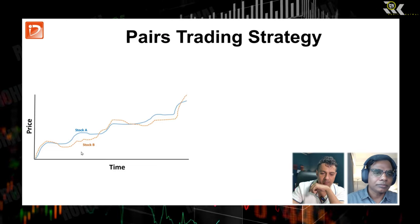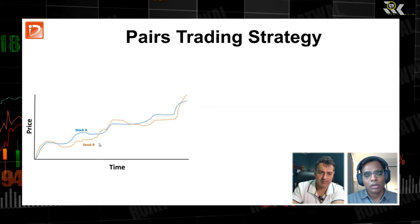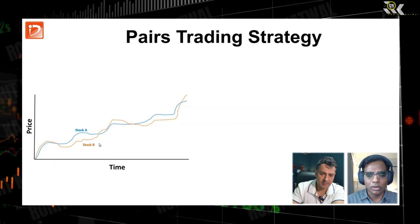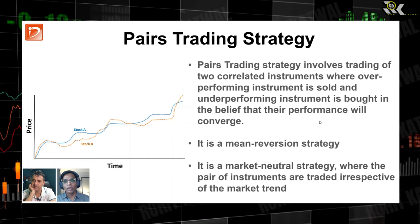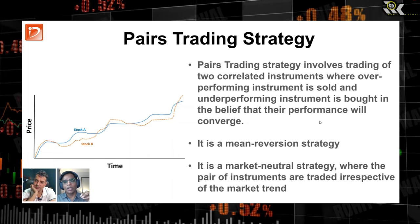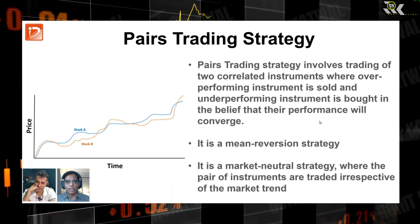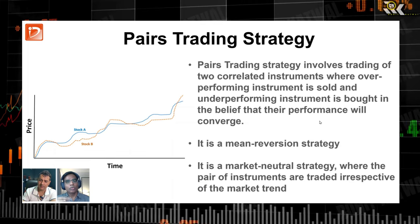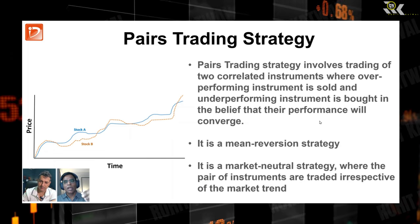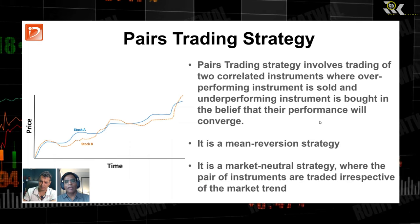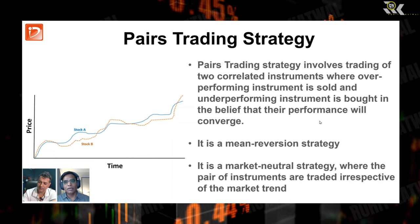In pair trading, let's compare stock A and stock B — they are moving along in the same direction with some minor differences. Pair trading involves trading of two correlated instruments where the over-performing instrument is sold and the under-performing instrument is bought, in the belief that their performance will converge. So it is very important that whatever pair you choose, they have to be correlated — they have to move together for most part of the time.